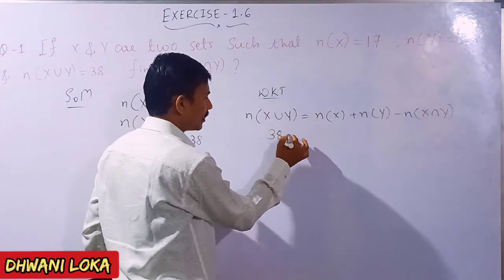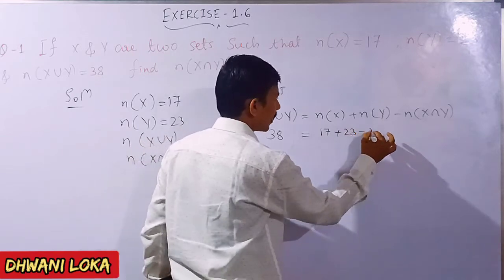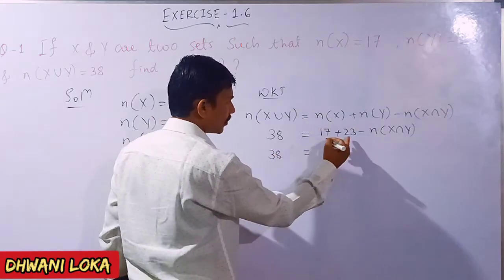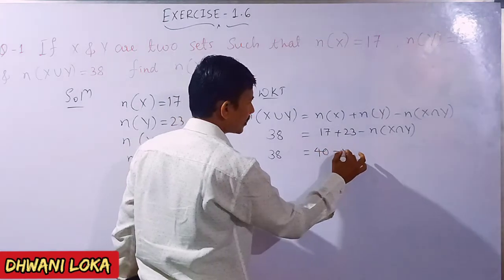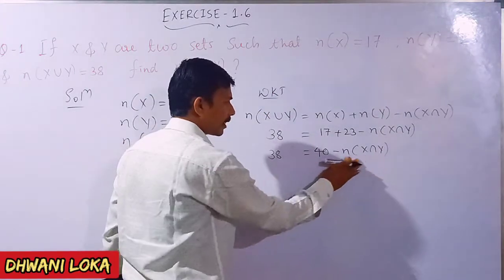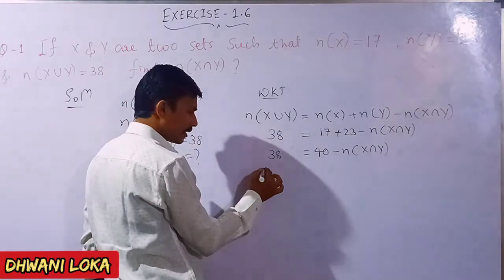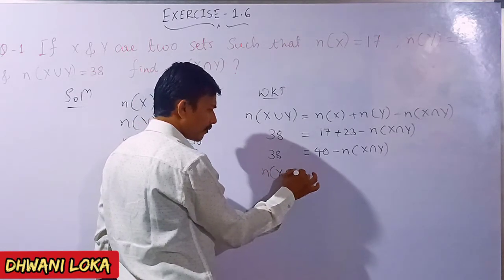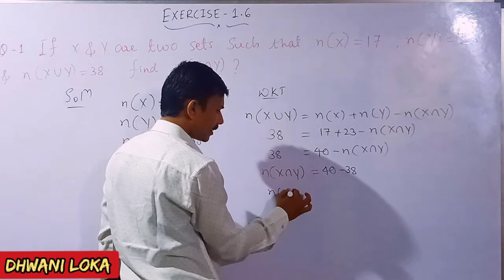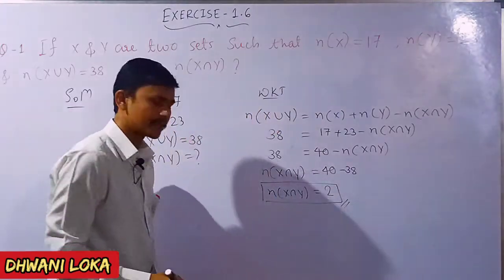Substituting values: 38 is equal to 17 plus 23 minus N of X intersection Y. Therefore, N of X intersection Y is equal to 40 minus 38, which gives the answer as 2. So N of X intersection Y is equal to 2.